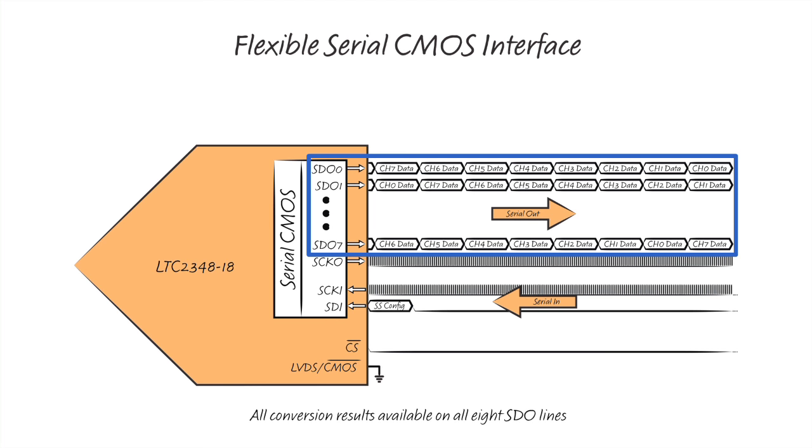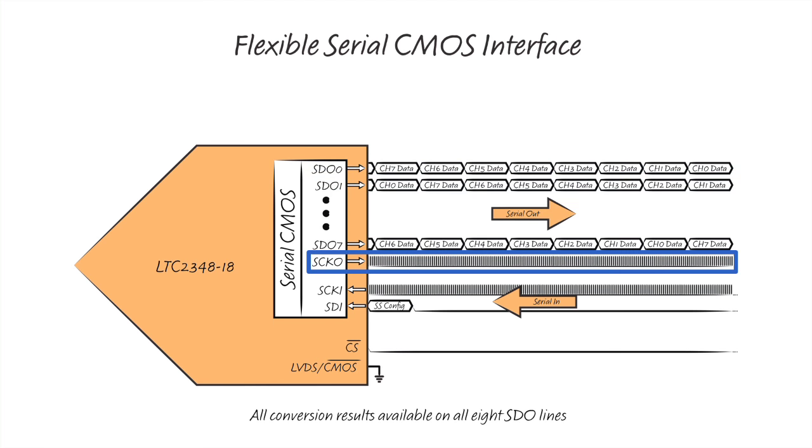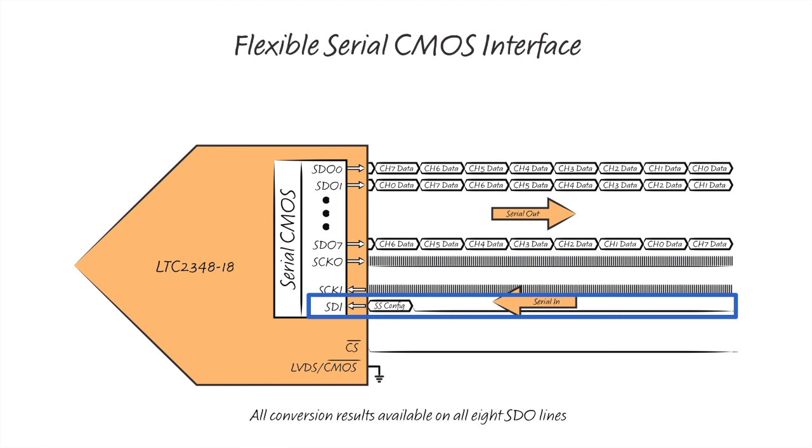Conversion results from all input channels are available on every SDO lane, so no device configuration is necessary. An optional phase-aligned data capture clock is also provided. This may be used to capture data at the receiver for added robustness to logic delay variations over supply and temperature. The CMOS interface features one serial data input line for configuring each channel's softspan range.